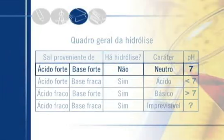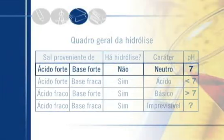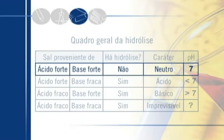Vamos analisar a primeira linha útil do quadro. Um sal que provenha simultaneamente de ácido forte e de base forte: ácido forte e base forte não permitem a hidrólise. Logo, não vai haver hidrólise, nada vai acontecer. Consequentemente, a solução permanece neutra e seu pH é 7. Sal de ácido forte com base forte — não há hidrólise, caráter neutro, pH 7.